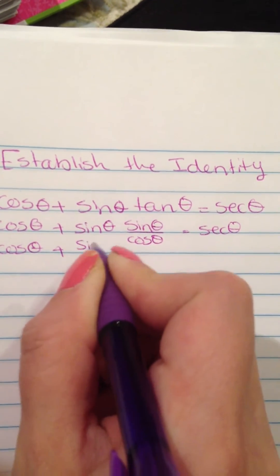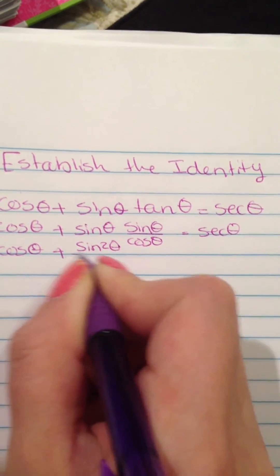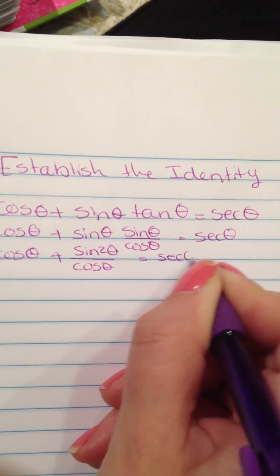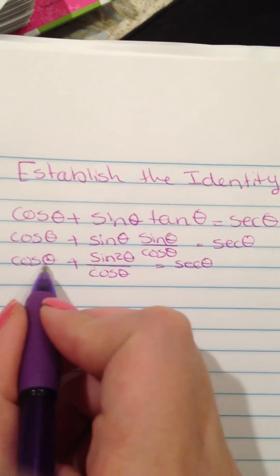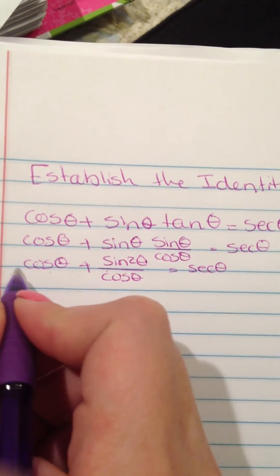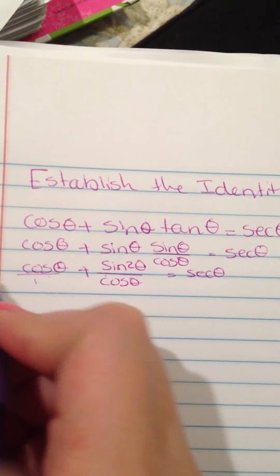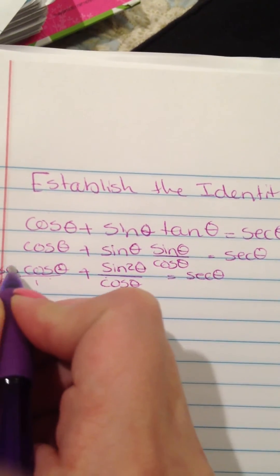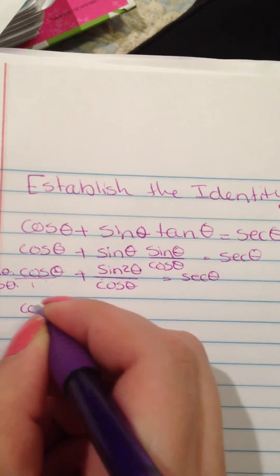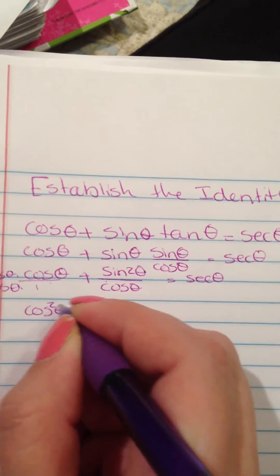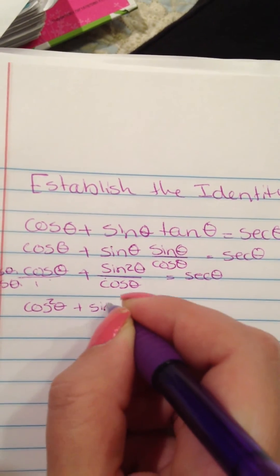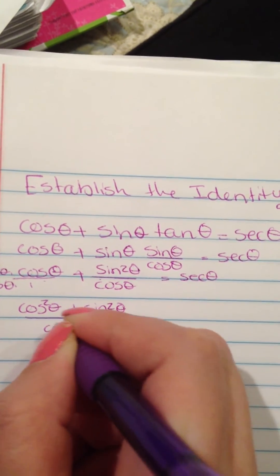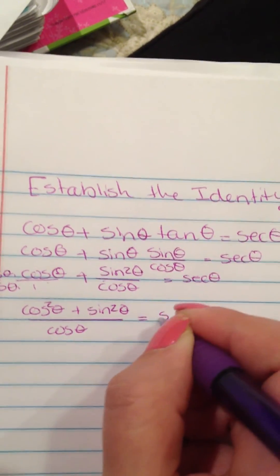Cosine of theta plus sine squared of theta divided by cosine of theta, which equals secant of theta. And then I want to add them both together, so I'm going to multiply top and bottom by cosine of theta times cosine of theta. So it's cosine of theta squared plus sine of theta squared divided by cosine of theta, which equals secant of theta.